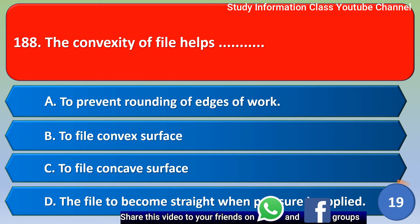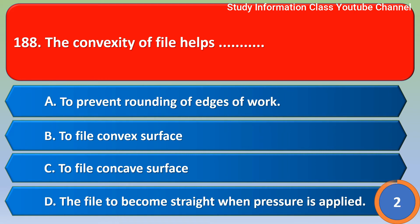Next question: the convexity of a file helps: option A to prevent rounding of the edge of work, option B to file a convex surface, option C to file a concave surface, option D for the file to become straight when pressure is applied. The correct answer is option A: to prevent rounding of edges of work.